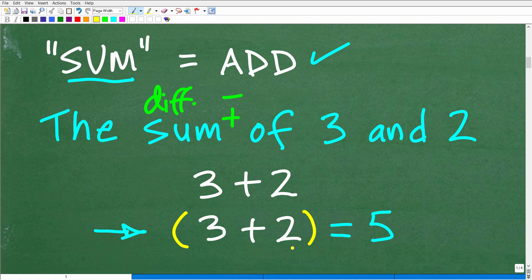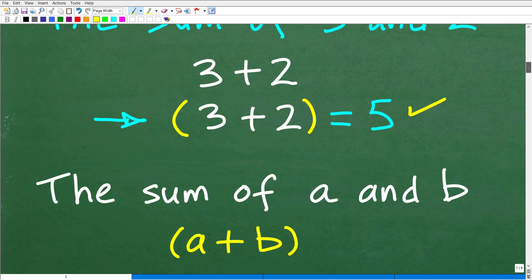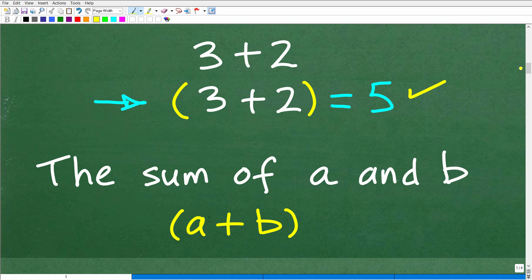Sums and differences, put them in grouping symbols, i.e. parentheses. So the sum of 3 and 2, we want to write as parentheses, 3 plus 2, and parentheses, of course, that is 5. Again, this is applicable in algebra. So if you have a statement like the sum of a and b, you want to write it as (a plus b), not just as a plus b. You want to use the parentheses (a plus b). So again, sum and differences, get in the habit of using parentheses.